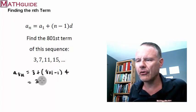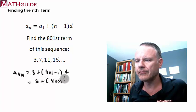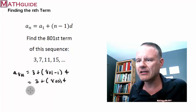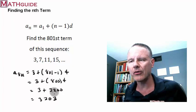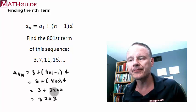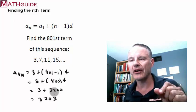So, you could throw this all into a calculator. Or you could see the math is fairly simple. 800 times 4 is 3,200. And when we add that together, we get 3,203. So, we know that the 801st term is equal to 3,203.